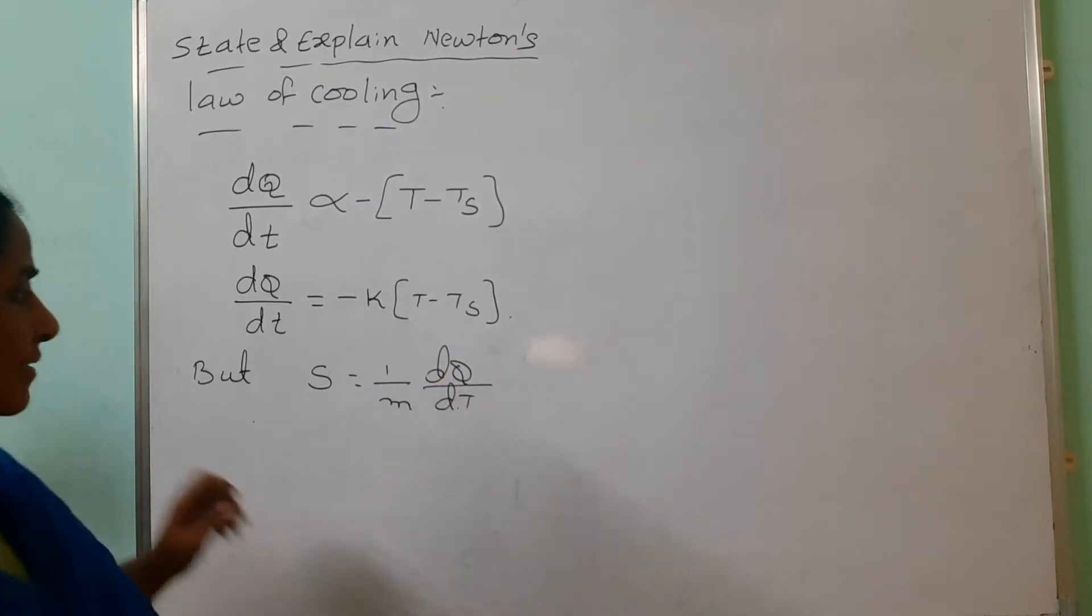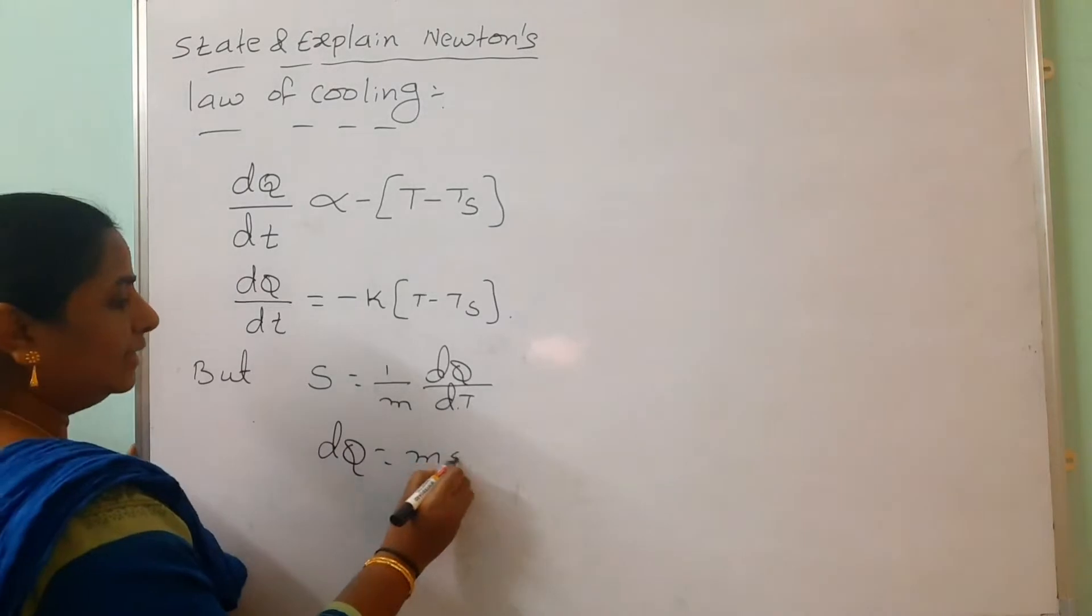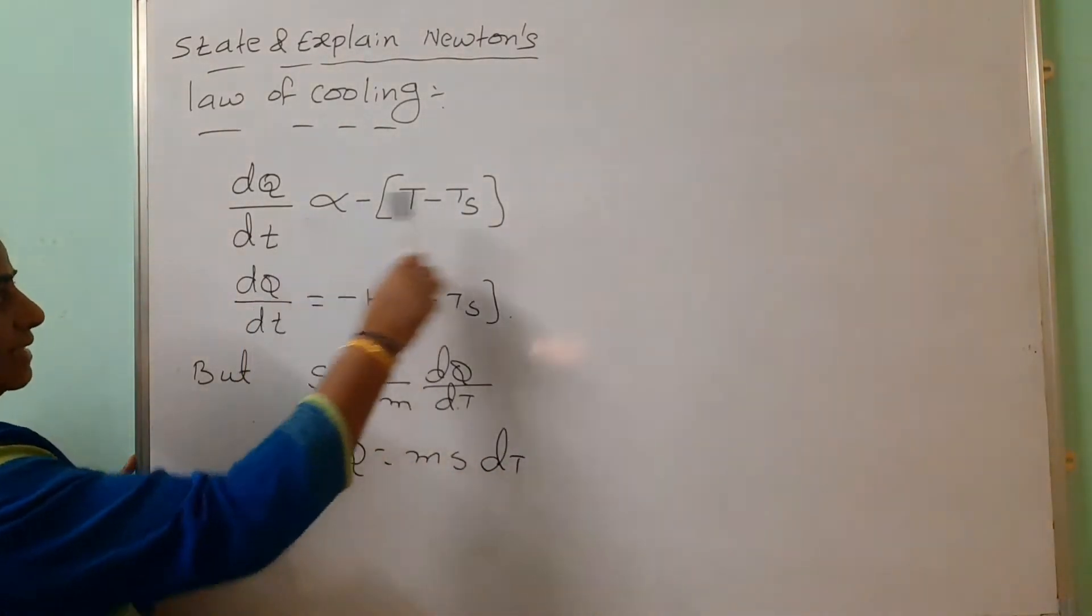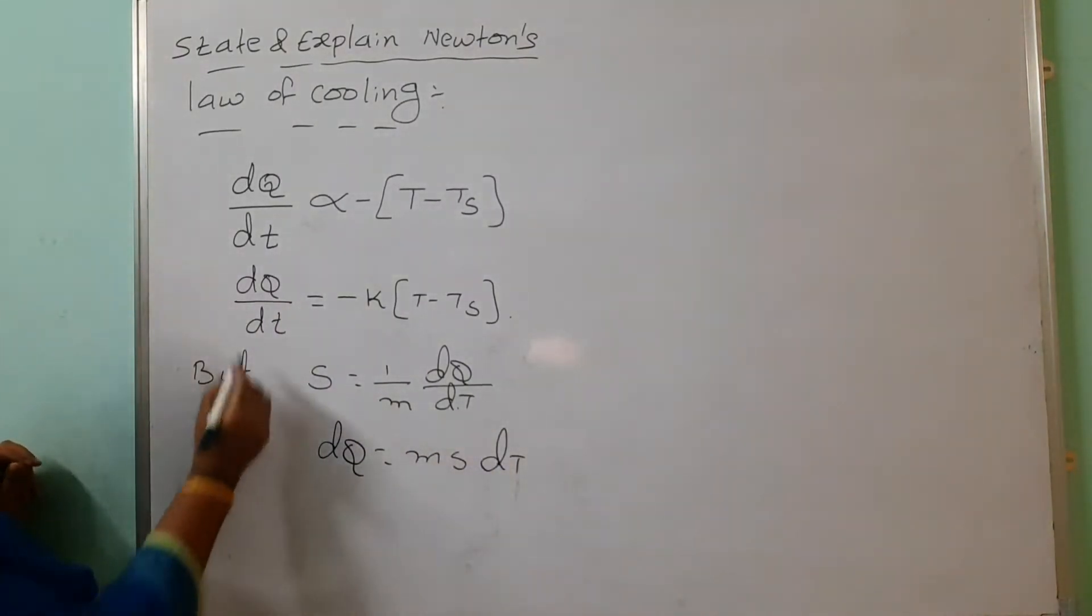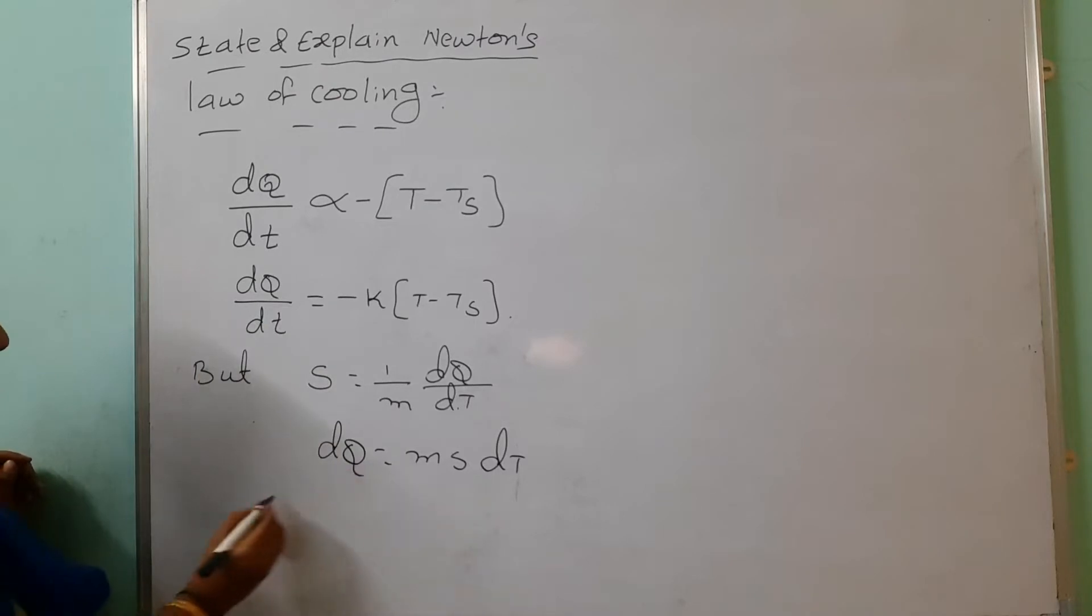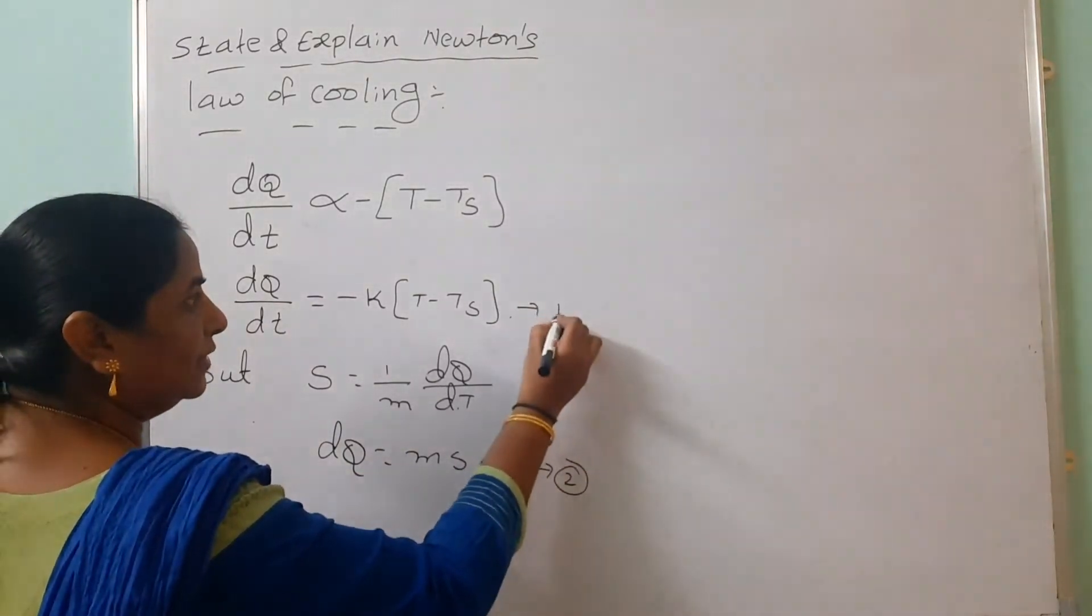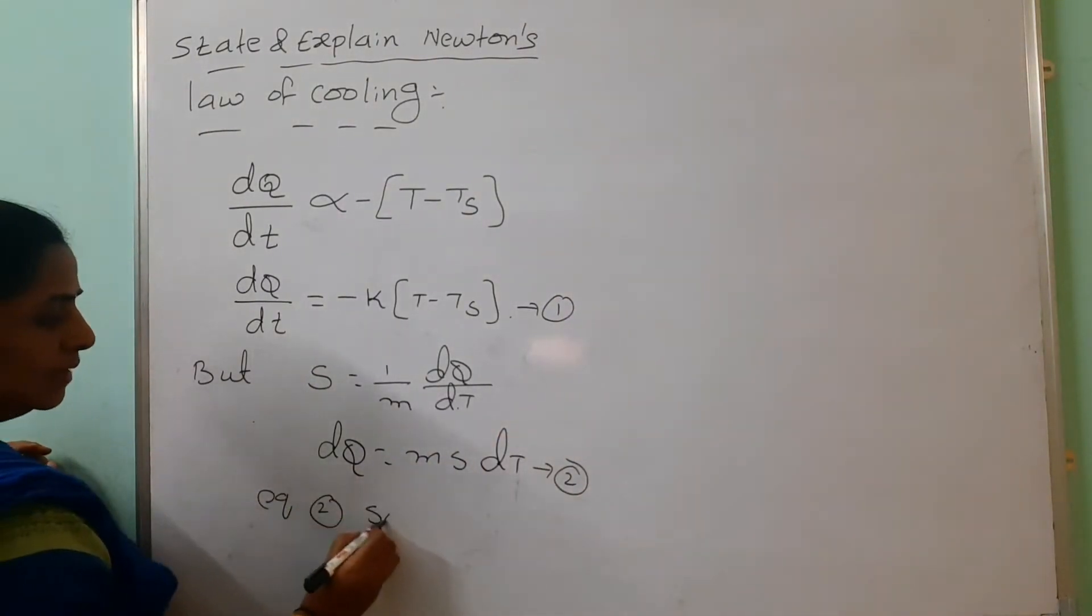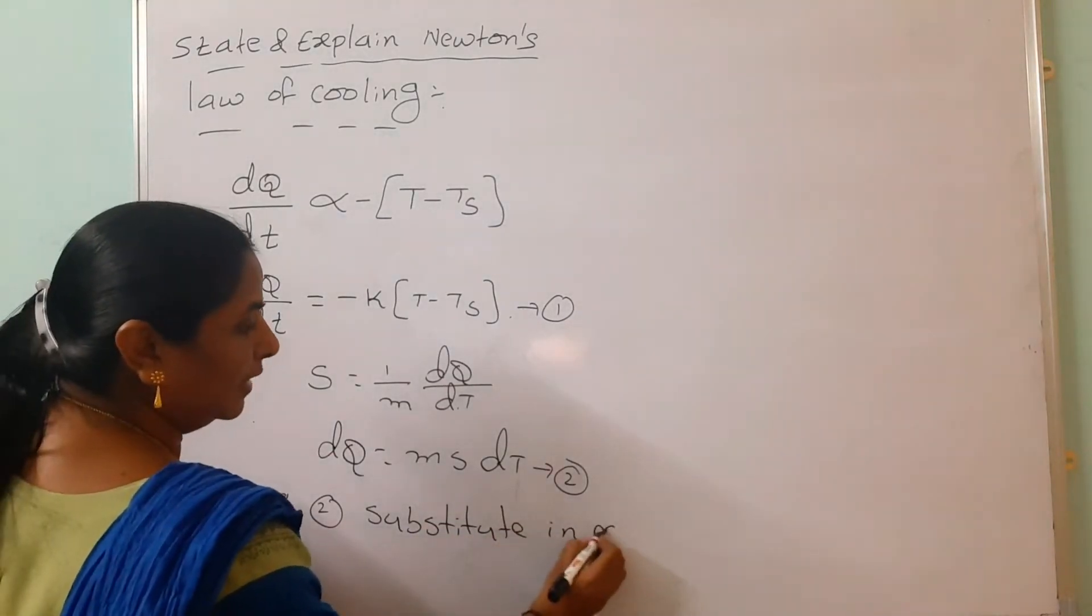So specific heat equals to 1 by M into DQ by DT. But what term we want from this? DQ equals to M S into change in temperature. This is change in time and this is change in temperature. Then we write equation 2 to substitute in equation 1.